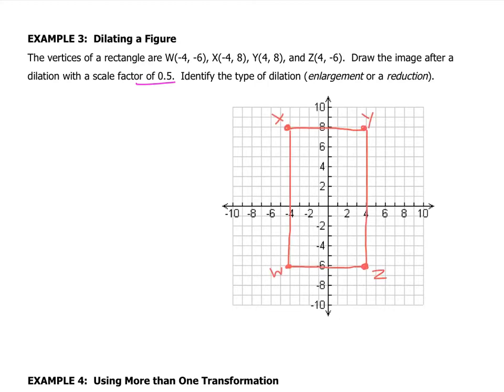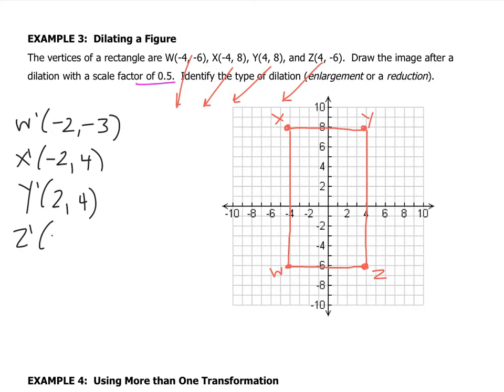So we're going to do the same thing again. We're going to take all of our coordinates, and we're going to multiply by 0.5. So that gives me W prime is negative 2, negative 3, because multiplying by 0.5 is the same as multiplying by 1 half, or you can get your calculator. X prime is at negative 2, 4. Y prime is at 2, 4, and Z prime is at 2, negative 3. So let's graph it. W prime, X prime, Y prime, and Z prime. So that made the rectangle smaller. So that is a reduction, because it reduced in size.